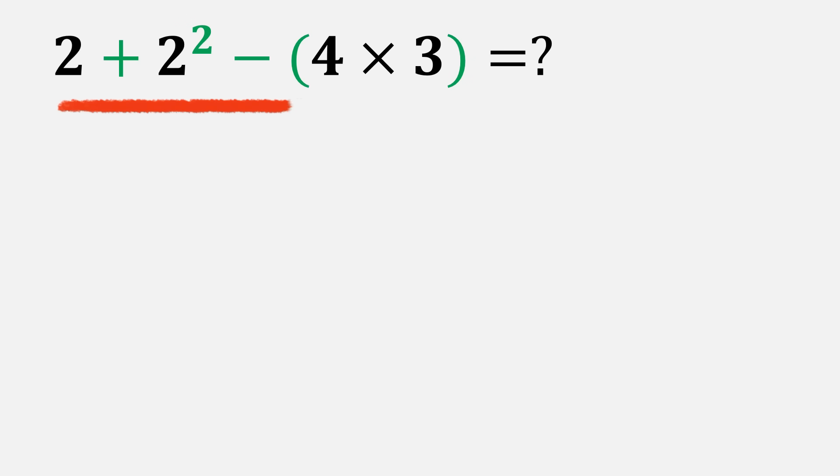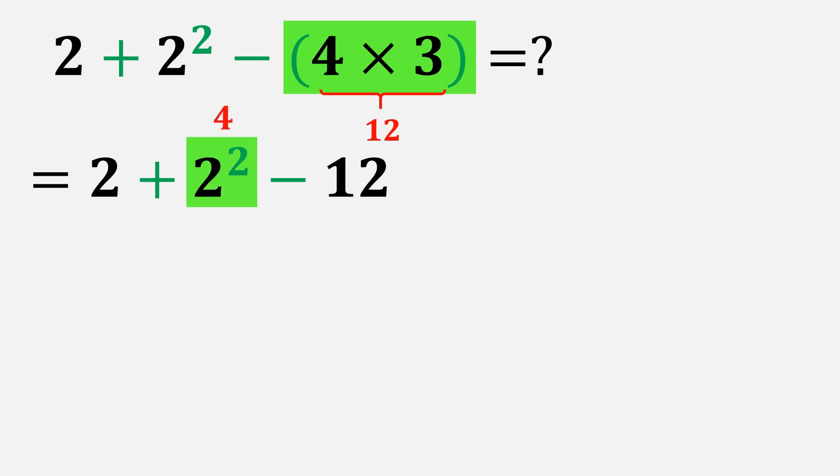Now let's move to the second example: 2 plus 2 squared minus (4 times 3). According to PEMDAS, we always start with what's inside the parentheses first. So inside the parentheses, 4 times 3 equals 12. Now the problem becomes 2 plus 2 squared minus 12. Next, we handle the exponent: 2 squared means 2 times 2, which gives 4. So now we have 2 plus 4 minus 12. Let's do the addition first: 2 plus 4 equals 6, then 6 minus 12 equals negative 6. So the correct answer is negative 6.